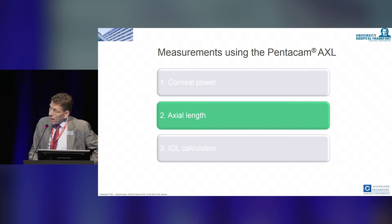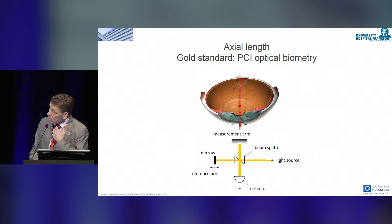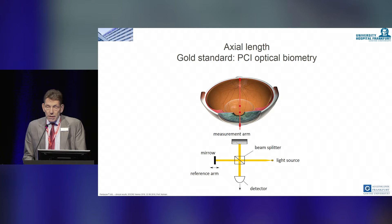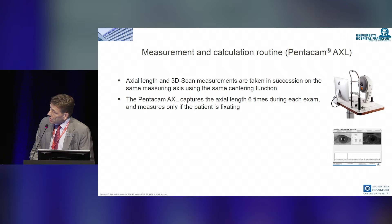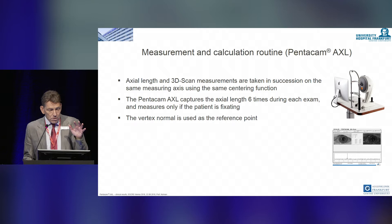Axial length now comes into play with this machine because axial length measurement is incorporated in the device. We now use as the gold standard optical coherence interferometry, and the Oculus machine has this axial length measurement incorporated. The calculation is done on a routine basis, with axial length combined with corneal measurements.